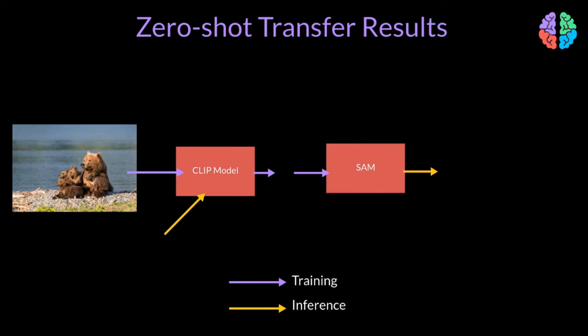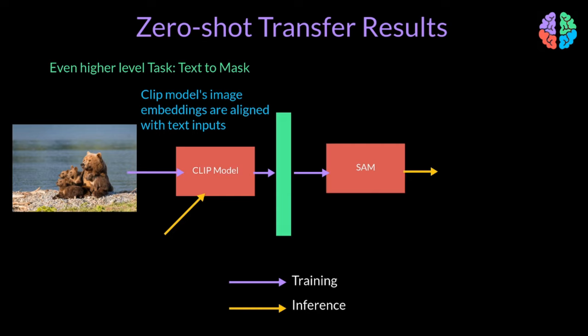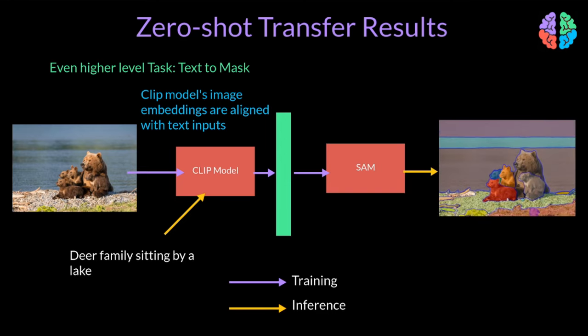An even more ambitious task is to input text prompts and produce masks at the output. They mention themselves that this idea is a proof of concept. To cater SAM for this problem, you first get image embeddings from a CLIP model and use those as input to SAM. During inference, because text and image are aligned in the CLIP model, you can simply input text to the CLIP model and get segmented outputs. The SAM model can understand simple prompts; however, as seen from the paper's figures, it does a far better job when guided further with some input points.